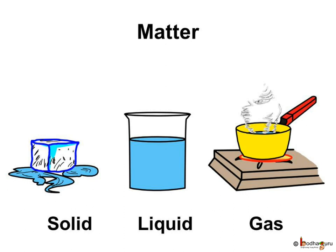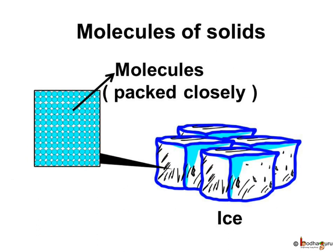All substances are present in one of the three forms — solid, liquid, and gas — because of the arrangement of molecules. In solids, molecules are closely packed and there is a kind of force that holds the molecules together. That is why solids are hard and have shape as well as weight.